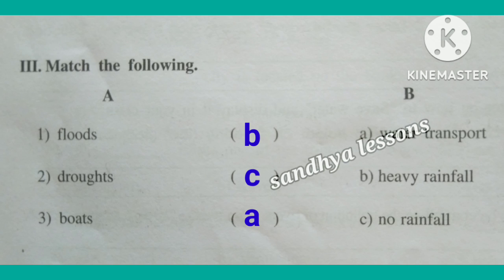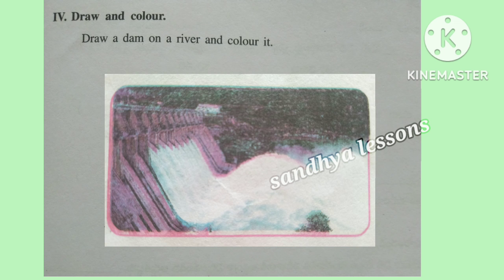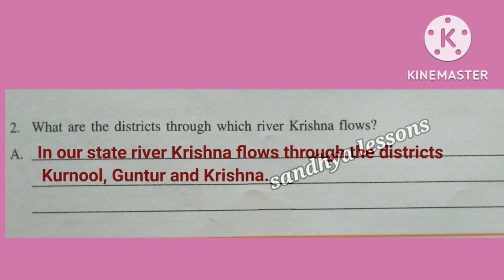Third, match the following. Floods — heavy rainfall; Drought — no rainfall; Boats — water transport. Fourth, draw a dam on a river and colour it. Fifth, answer the following questions. First question: Why do rivers get flooded? Floods occur when there is heavy rainfall in the catchment area of the river. Second question: What are the districts through which river Krishna flows? In our state, river Krishna flows through the districts Kurnool, Guntur, and Krishna.